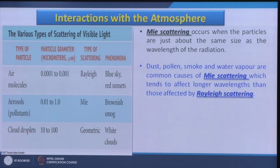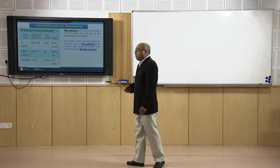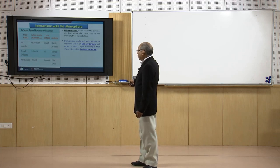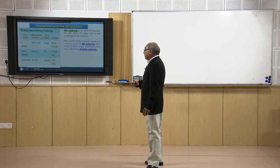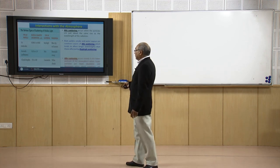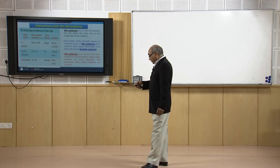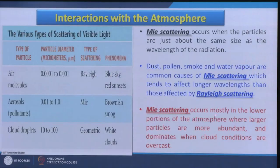Cloud droplets are much larger — 10 to 100 micrometers — compared to air molecules or aerosols, and this type of scattering is called geometric scattering, which causes white clouds to be observed. What we see as fog nowadays is often smoke plus fog, sometimes called smog, where both Mie scattering and geometric scattering may occur, creating very poor visibility. Mie scattering occurs mostly in the lower portions of the atmosphere where larger particles are more abundant, unlike Rayleigh scattering which occurs in the upper atmosphere.